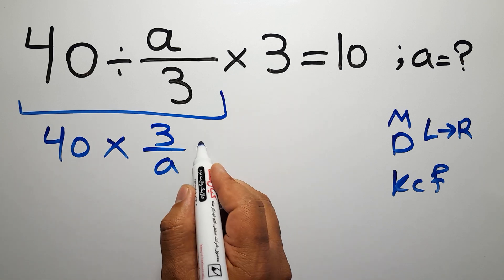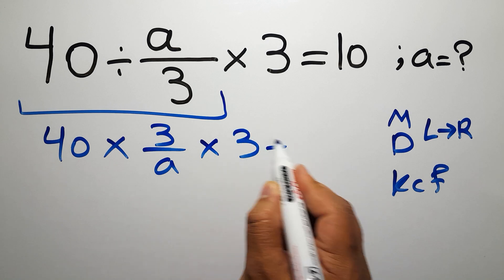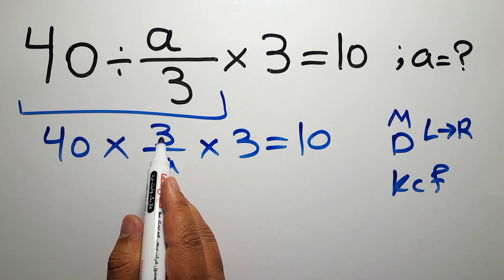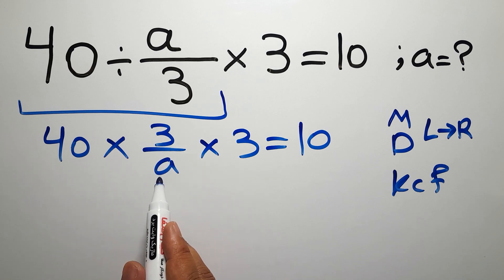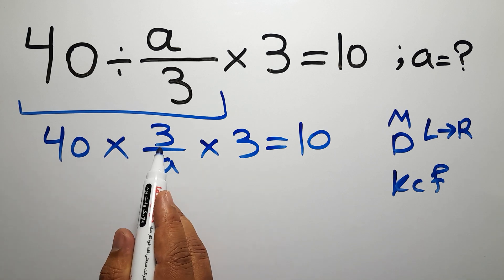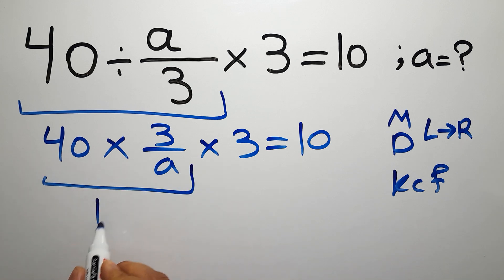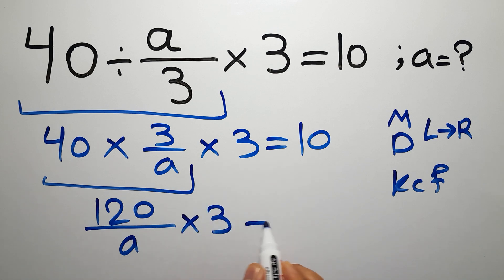Now, 40 times 3 gives us 120, so 120 over a, times 3, equals 10.